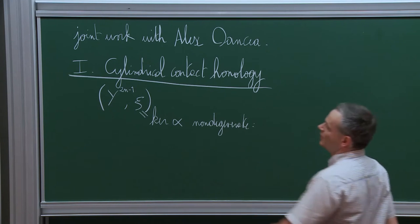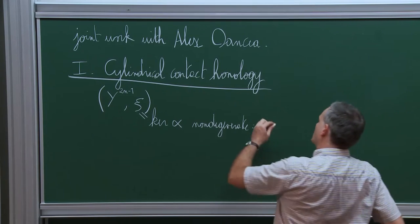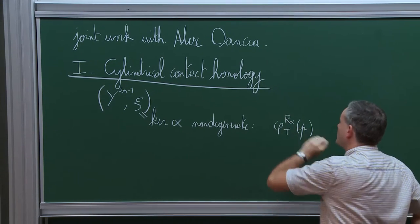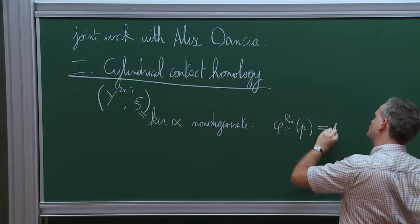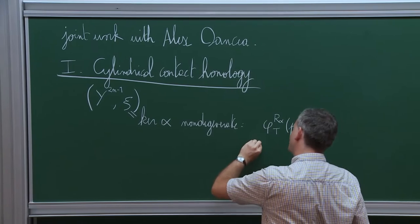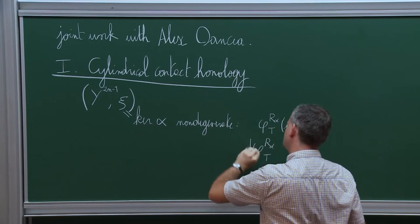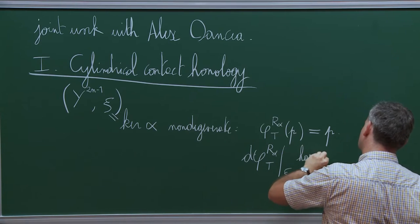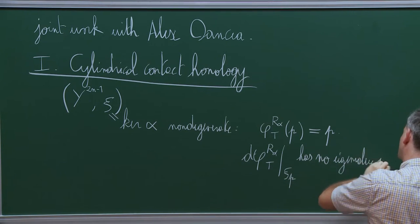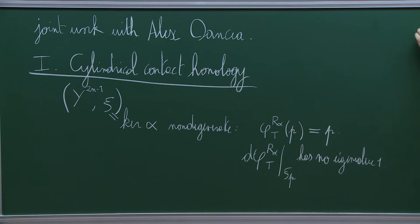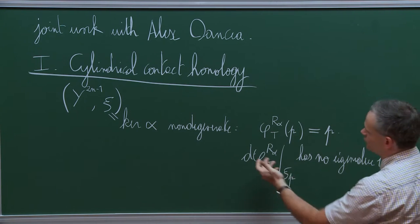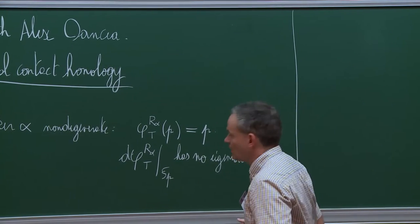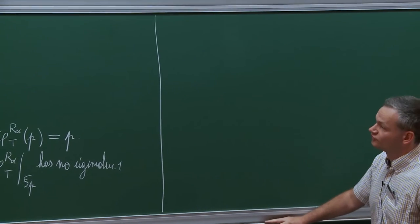This means that if you have a closed Reeb orbit—a point P such that the Reeb flow after some positive time t returns to P—then if you look at the differential of this Reeb flow at time t, restricted to the contact hyperplane at point P, it has no eigenvalue equal to 1. Whenever you are in such a situation, modulo some choices of trivialization of the contact structure along the trajectory starting and ending at P, you can associate to such an orbit the Conley-Zehnder index, an integral-valued index.